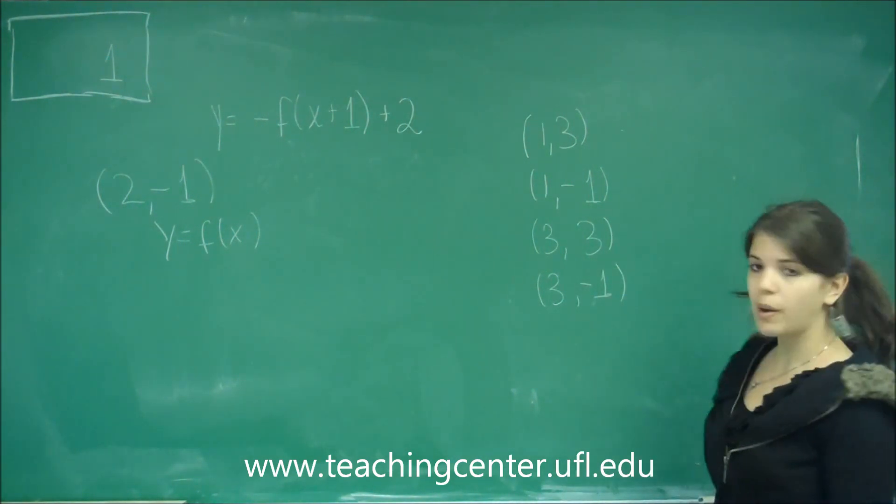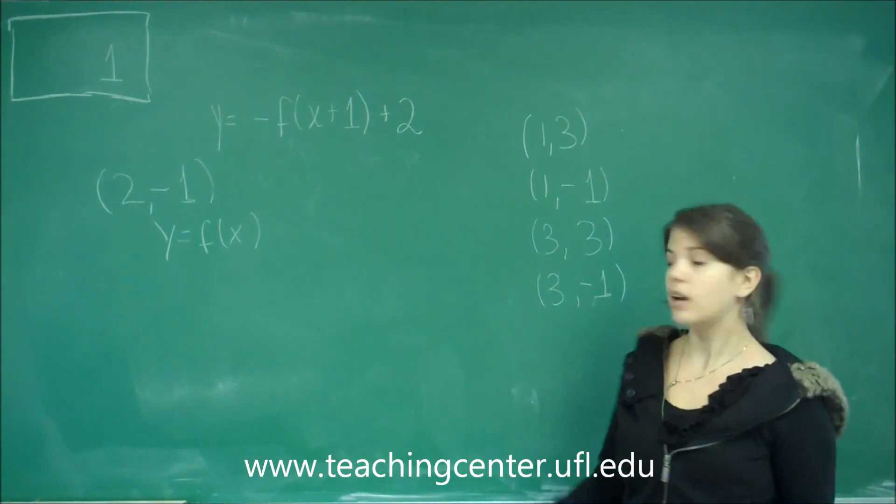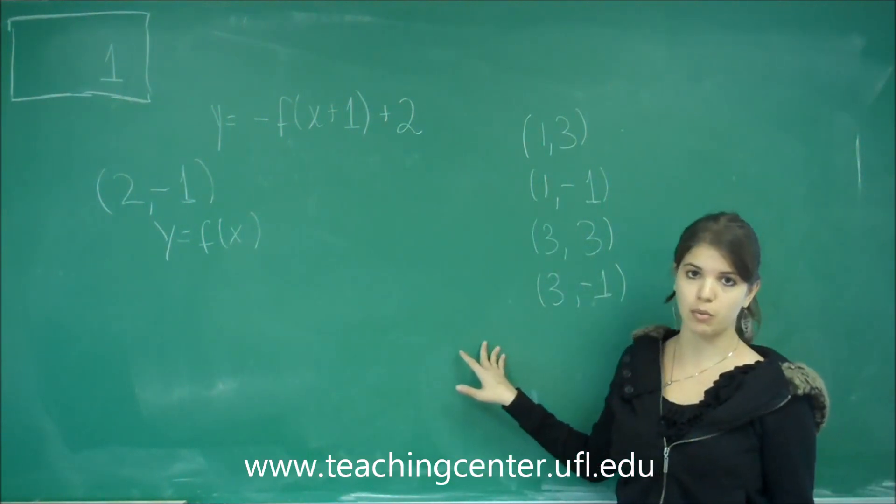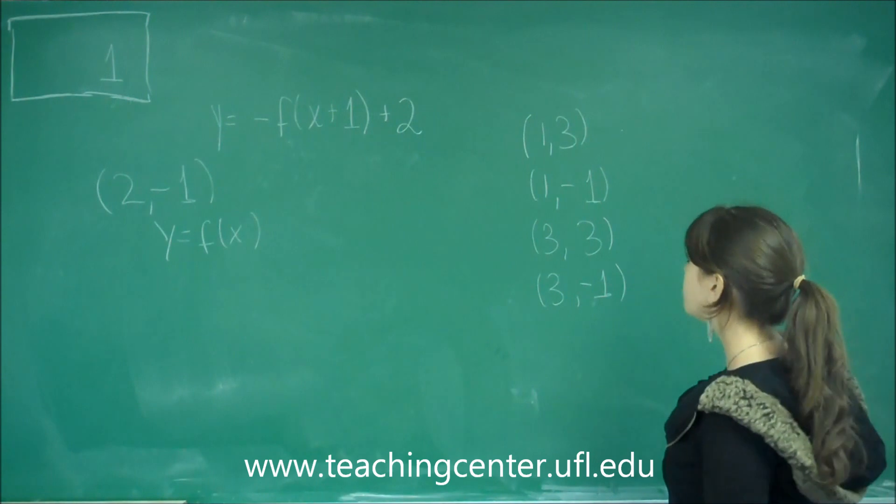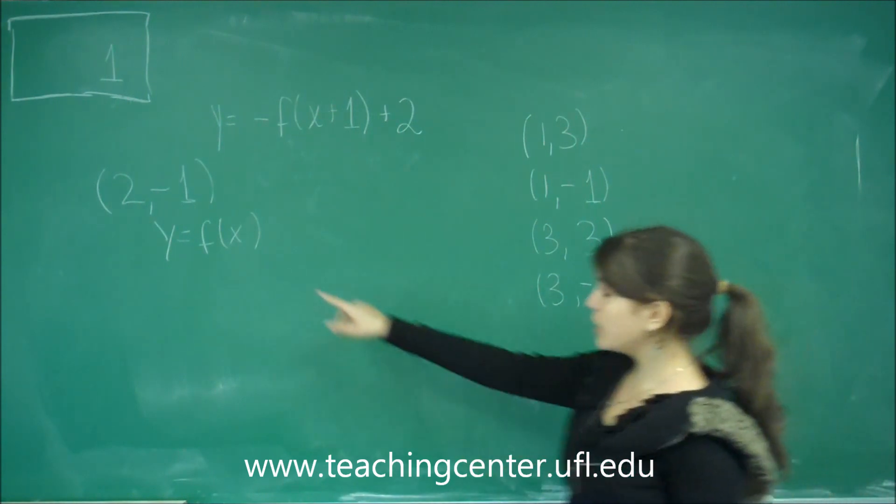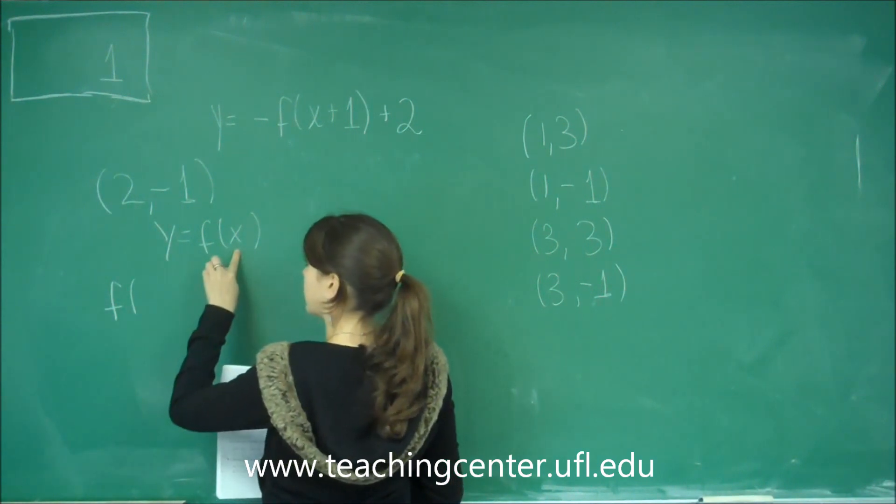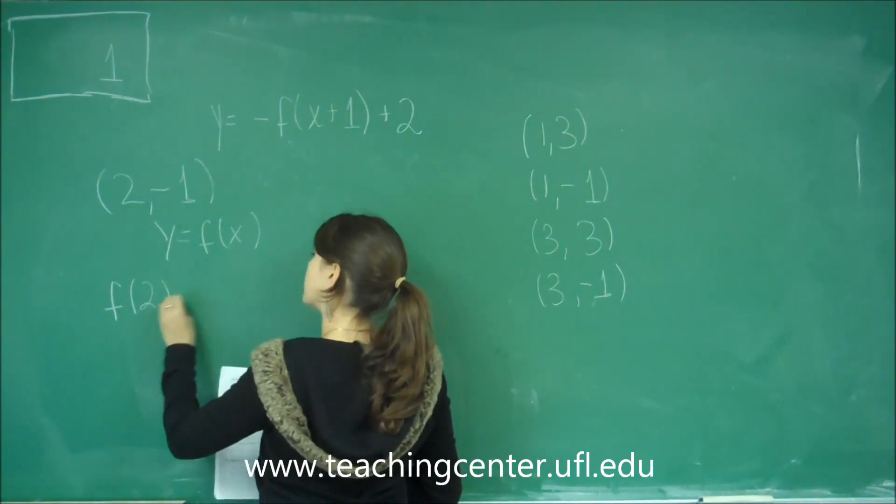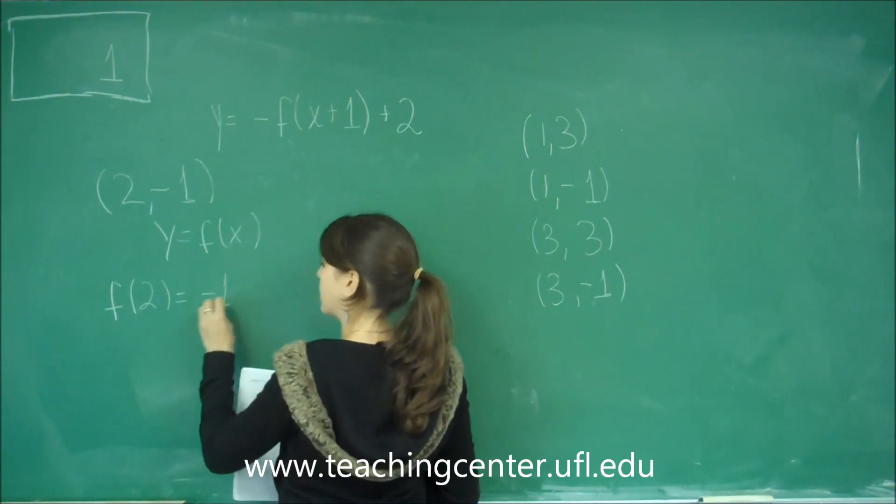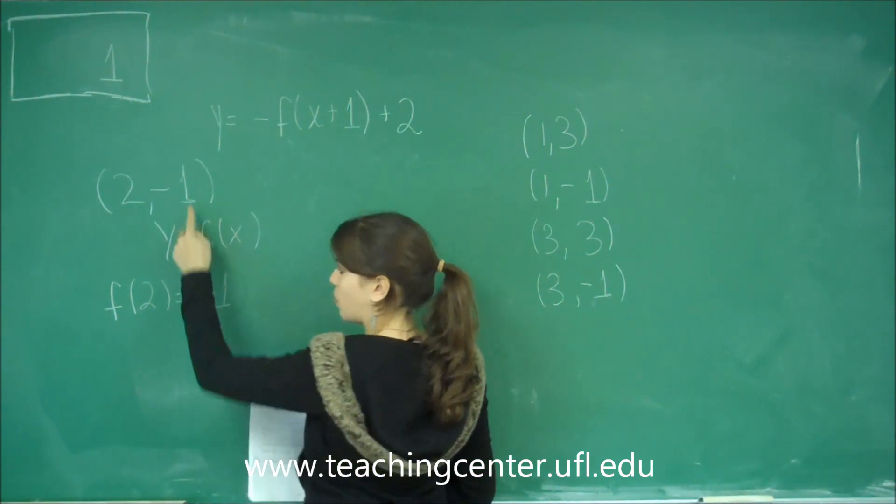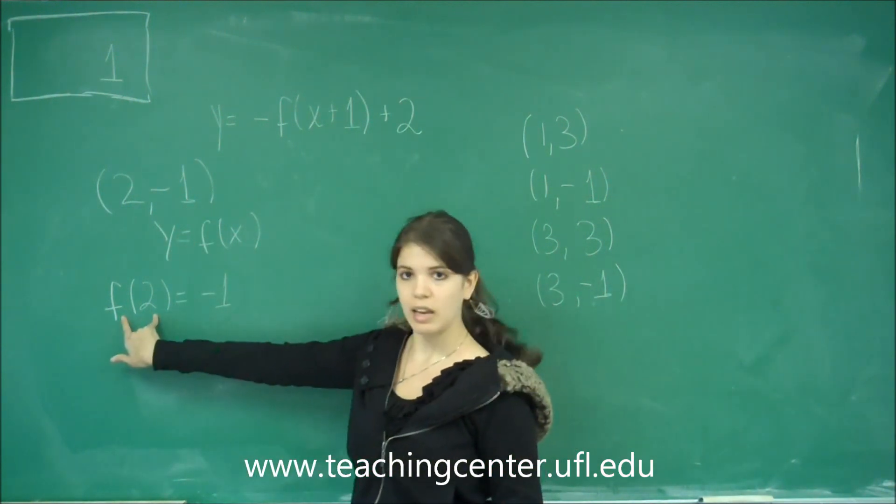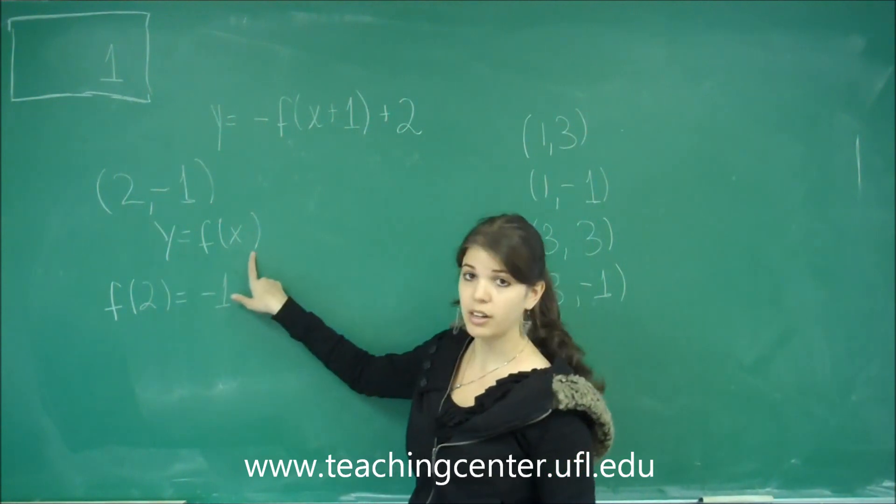Okay, so the way we have to reason through this is kind of using the choices that we're given. So if we write it into this form, it should be f of x, which is 2, equals negative 1. Negative 1 is the y, which is the same thing as the f of x, as stated over here.